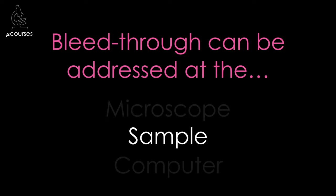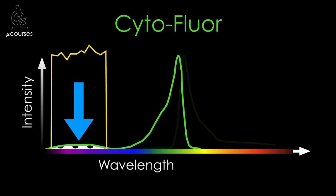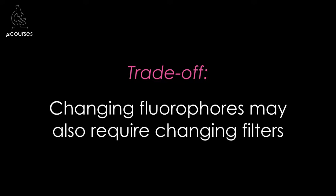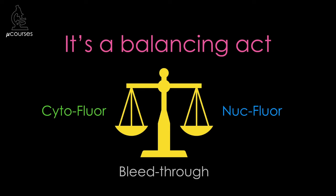In many cases — pretty much always when imaging four or more fluorophores — changing filter sets alone will not be sufficient to adequately reduce bleed-through. So let's think about adjustments to the sample and image acquisition. The most obvious change is to switch fluorophores: for example, while cytoflor is excited by filter set N, cytoflor 2 is not. But when switching fluorophores, carefully examine the spectra because you may need to change filters as well. Additional strategies involve a balancing act, thinking about the relative amounts of fluorophore present and the amount of photons collected when acquiring images.